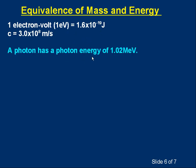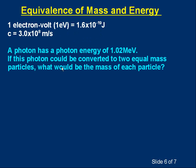A photon has a photon energy of 1.02 MeV. If this photon could be converted to two equal mass particles, what would be the mass of each particle? Pause the video, have a go. I hope you've tried it. Well, if we're going to make two particles from this single photon, each particle must be made from half of the energy. So each particle is made from 1.02 MeV divided by 2, which is 0.51 MeV. That's mega electron volts. You know, mega is 10 to the 6.